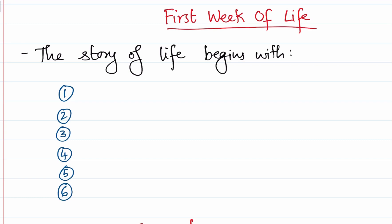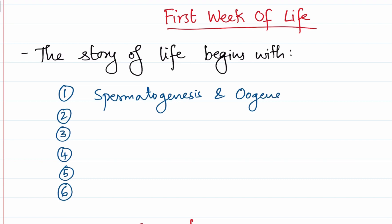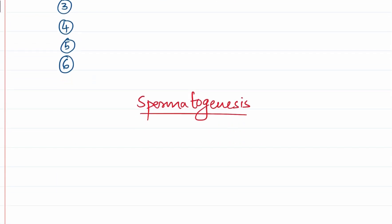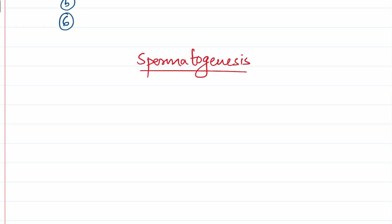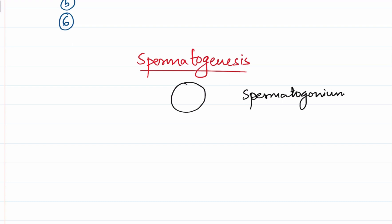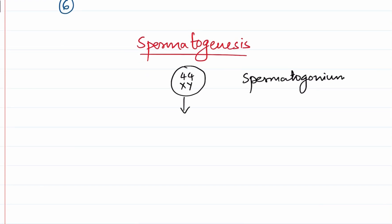The story of human life begins with the formation of gametes. The first event we need to learn is about spermatogenesis and oogenesis. We might have already learned about these two topics in physiology. Spermatogenesis is the process of formation of sperms in males. Once the male attains puberty, the primordial germ cells will develop into spermatogonia, which have the normal 44XY karyotype of males. The spermatogonia will undergo repeated cycles of mitosis and form the primary spermatocyte.